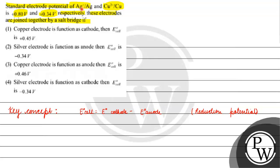The one with higher reduction potential will reduce, so silver will reduce. Where will copper be? It will be anode.